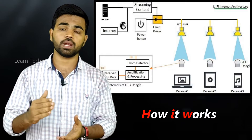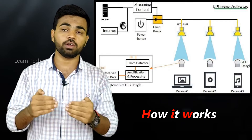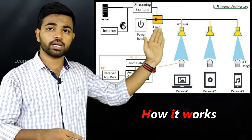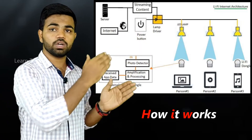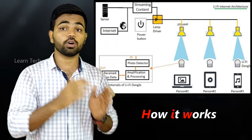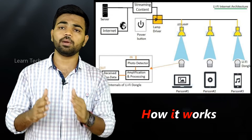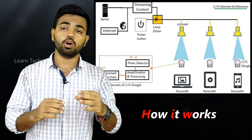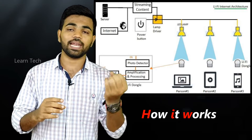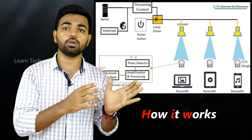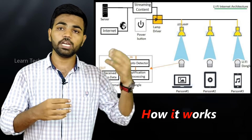Now, Li-Fi has a different way. There is a way to use the internet. First of all, in the internet, the first one is to receive the lamp and receive it. For example, there is a light mode — there is a lamp. If you use the LED, you can use the data.